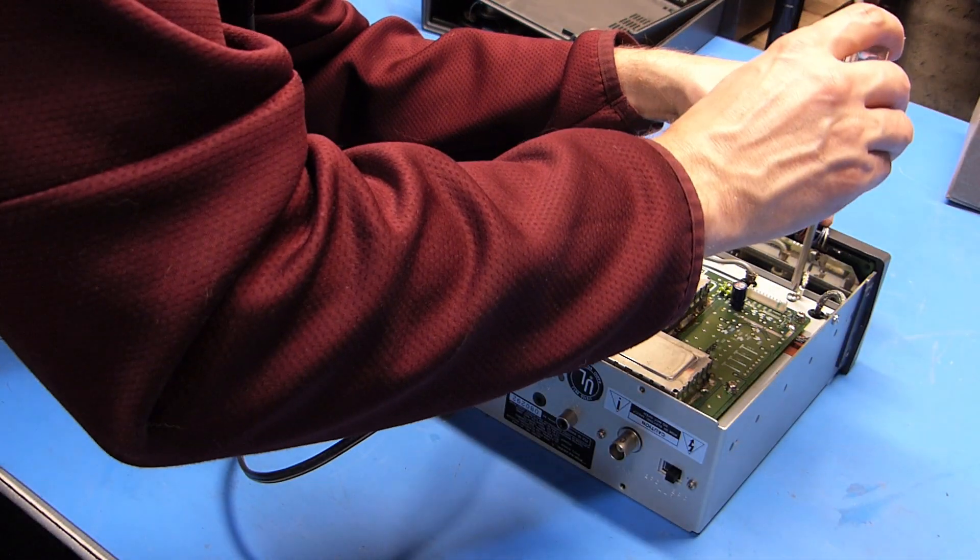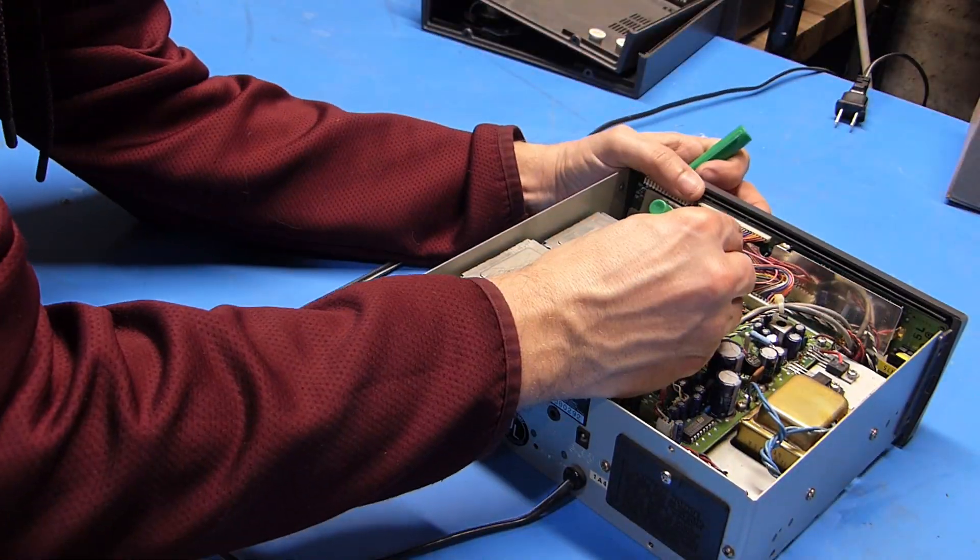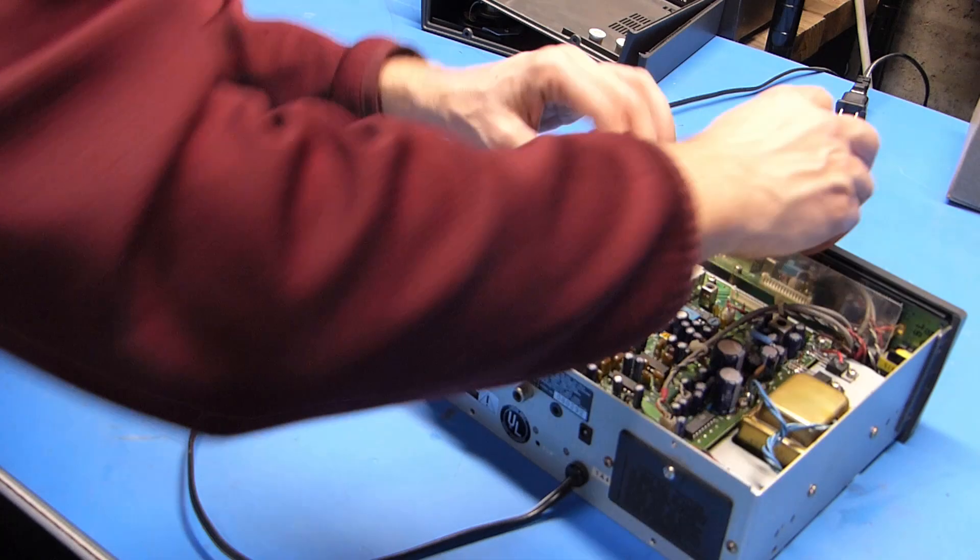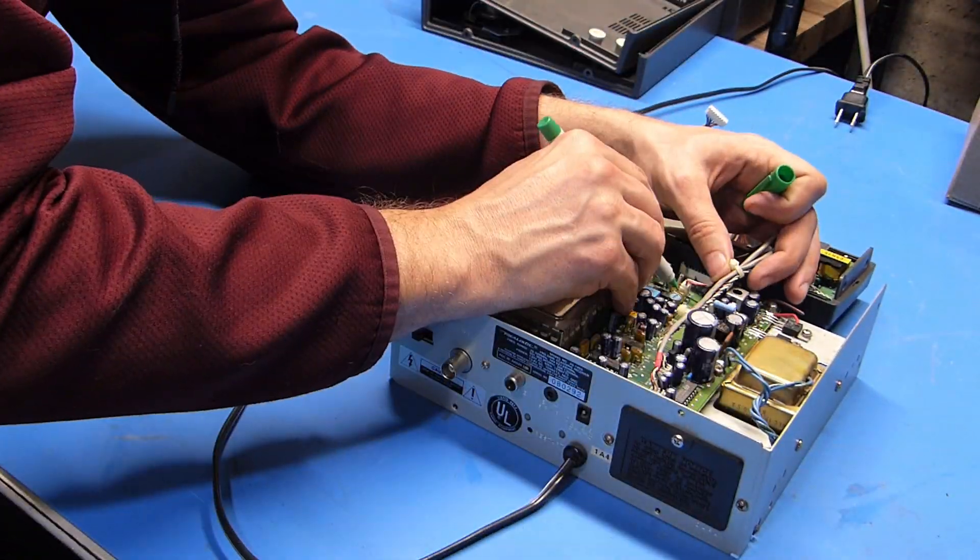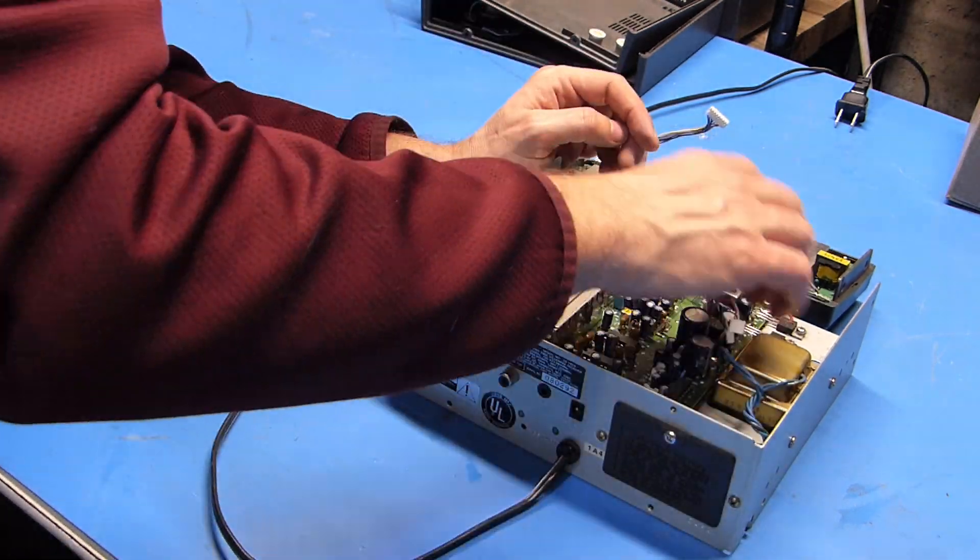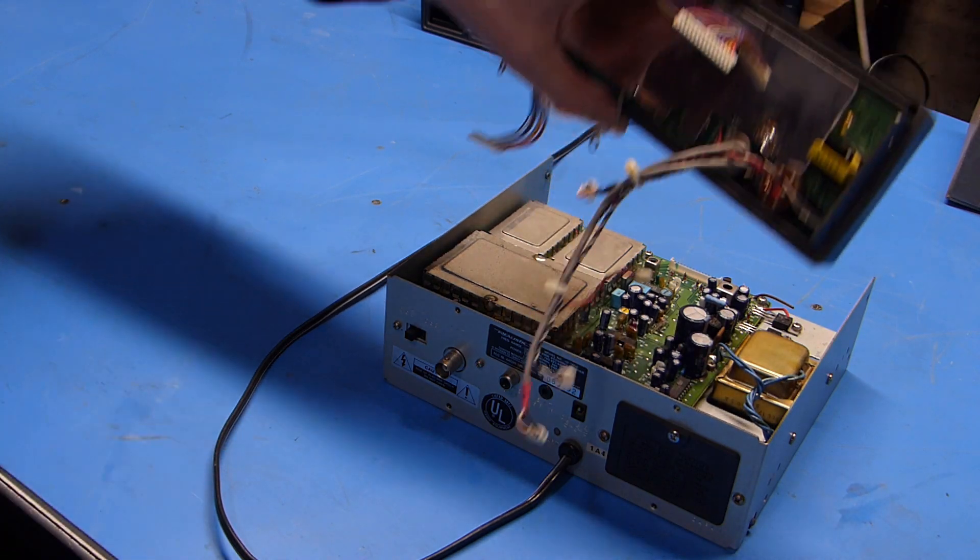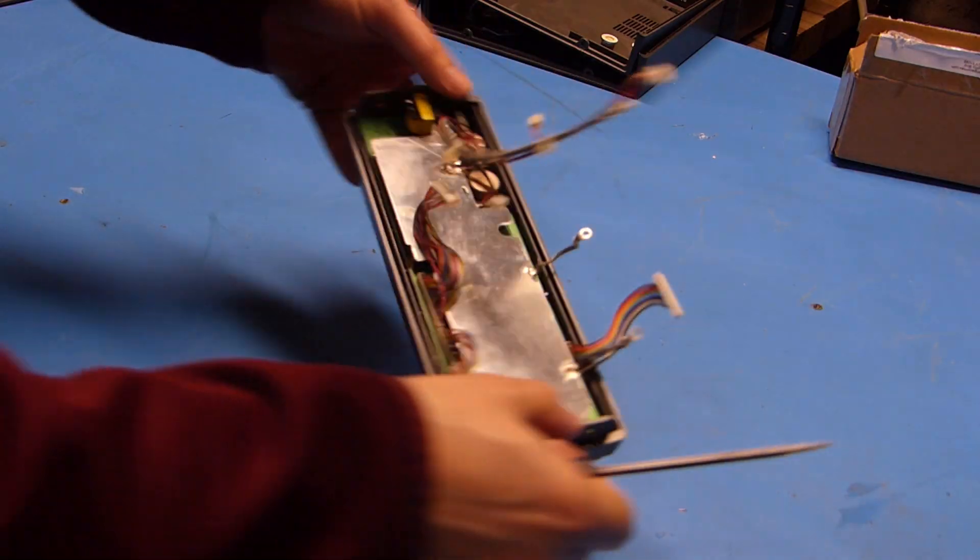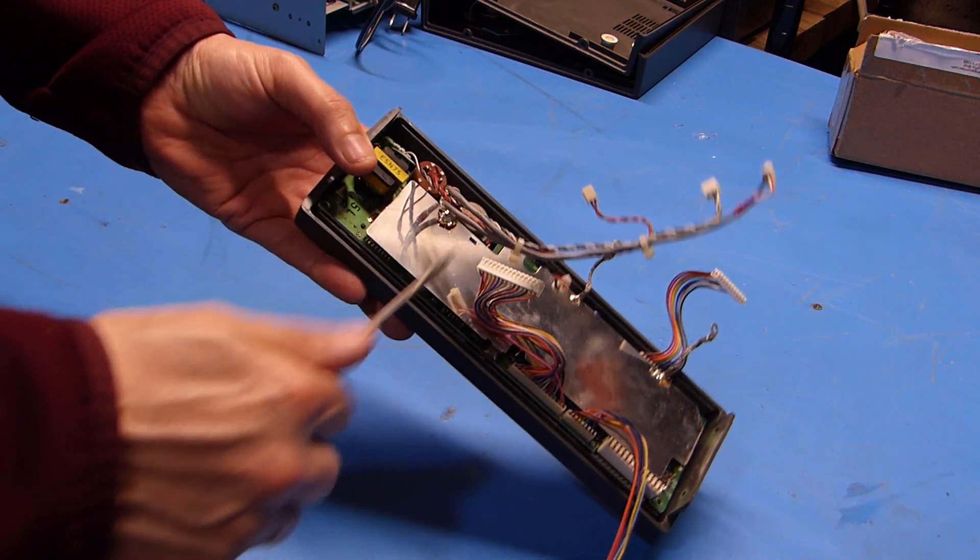And it looks like there's another shield there that I missed. And I think we're now finally free from the radio. So I think what I need to do now is just carefully work out this main circuit board from the bezel. It's probably just clipped in there at this point but I'm not positive of that so I'm going to go slow.